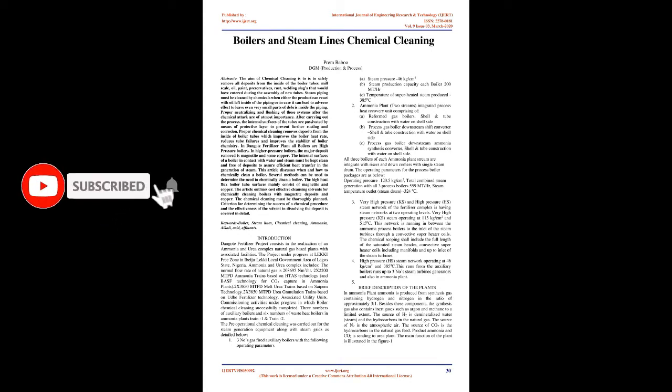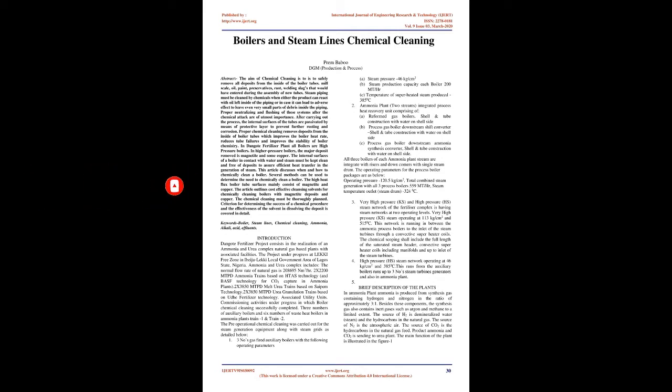Several methods can be used to determine the need to chemically clean a boiler. The high-heat-flux boiler tube surfaces mainly consist of magnetite and copper. The article outlines cost-effective cleansing solvents for chemically cleaning boilers with magnetite deposits and copper. The chemical cleaning must be thoroughly planned. Criterion for determining the success of a chemical procedure and the effectiveness of the solvent in dissolving the deposit is covered in detail.